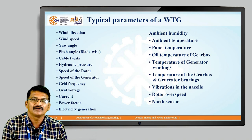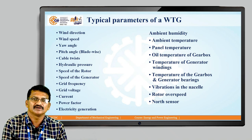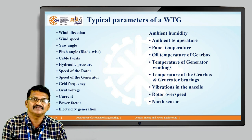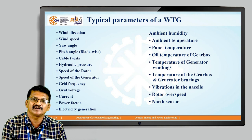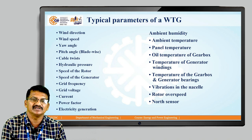The typical parameters to be measured in a wind turbine include: wind direction, wind speed, yaw angle, pitch angle, blade wise loading, cable twist, hydraulic pressures for the gearbox oil and braking system, speed of rotor, speed of generator, grid frequency, grid voltage, current, power factor, electricity generation, ambient humidity, ambient temperature, panel temperature, gearbox oil temperature, temperature of generator winding, temperature of gearbox and generator bearings, vibration in the nacelle, rotor overspeed, and north sensor.